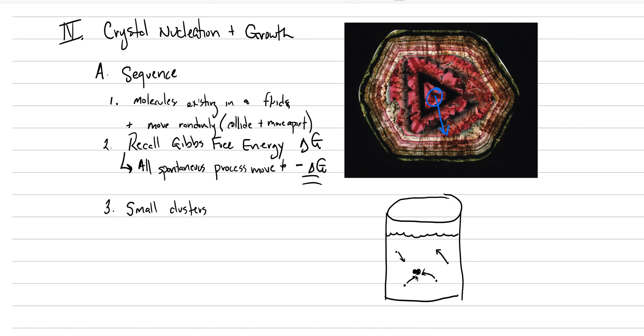There are all these bonds on the outside that are unsatisfied. That does not have a Gibbs free energy that's favorable towards more crystallization. And instead, what should happen there is that that cluster will move apart or dissolve. So small clusters are energetically unstable, and that will make them dissolve.